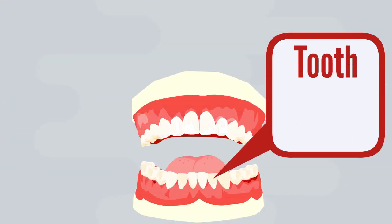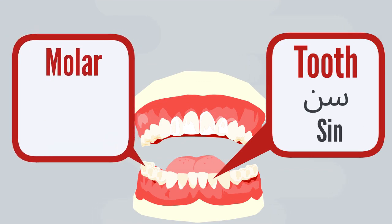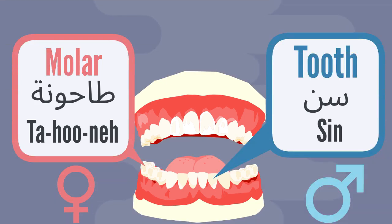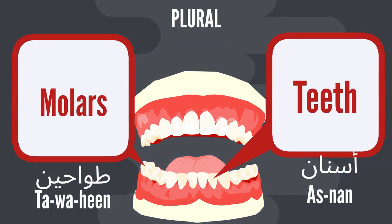And inside our mouth — tooth is sin. And a molar — tāhūnē. Tooth is a male noun, so we say hādā sān. And molar is a female noun, so we say hādī tāhūnē. The plural form for teeth is snān. And for molars — tawāhīn.